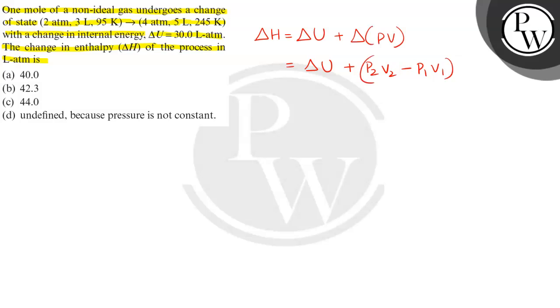So let us substitute this value. So the internal energy change is given here, look: 30 liter. So 30 plus this P₂, P₂ is how much? This is P₂, 4 into V₂. V₂ is 5.